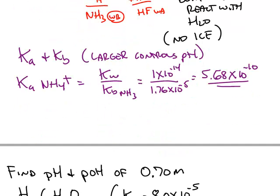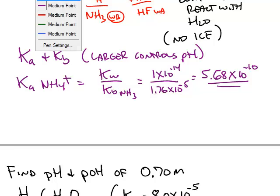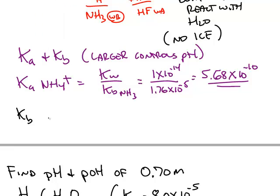Ka of hydrofluoric acid is 3.5 × 10^-4. Looking at those two values, 10^-10 is a larger value than 10^-11.